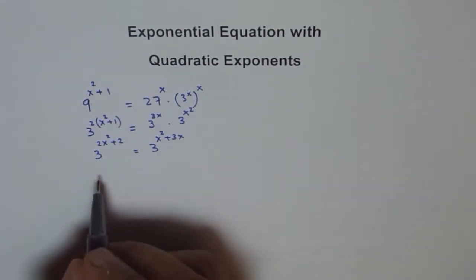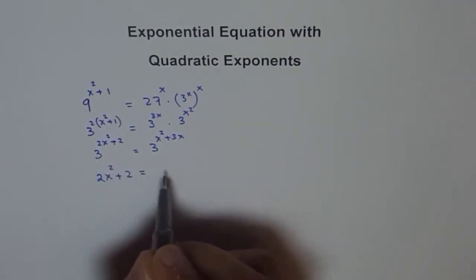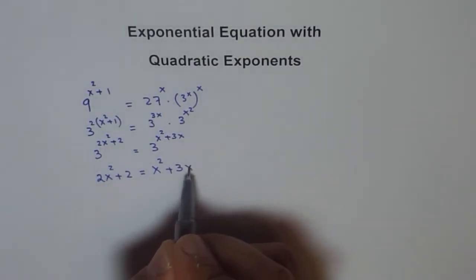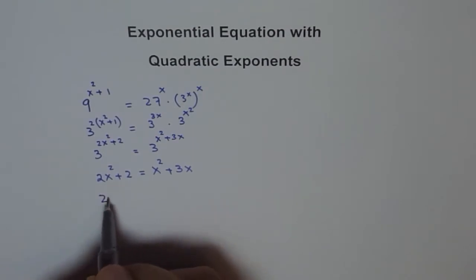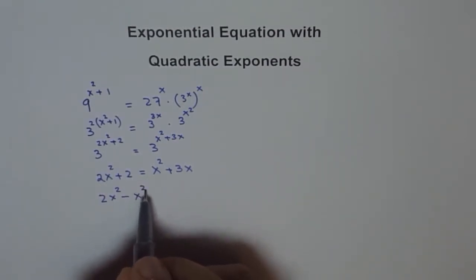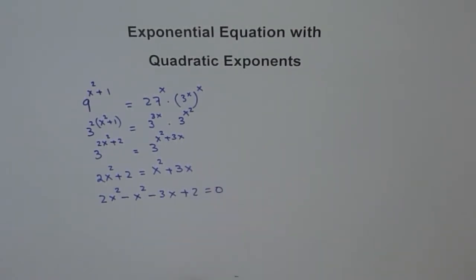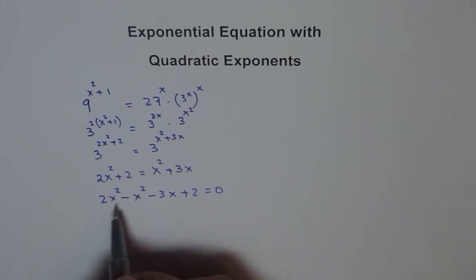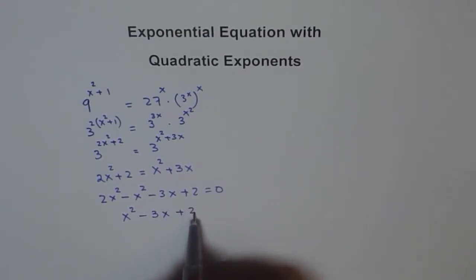We have the same base, and therefore we can equate the exponents — they should be equal. So now we have 2x squared plus 2 equals x squared plus 3x. We can bring everything to one side and we get x squared minus 3x plus 2 equals 0.